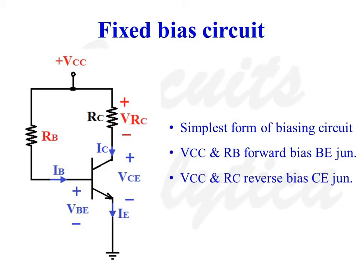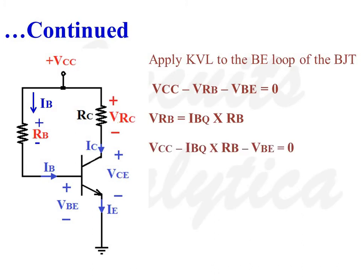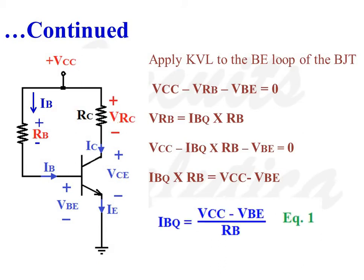First, we write an expression for base current IBQ. Applying KVL to the base-emitter loop of the BJT, we get: VCC minus VRB minus VBE equals 0. Since VRB equals IBQ times RB, we can write VCC minus IBQ·RB minus VBE equals 0, or IBQ·RB equals VCC minus VBE. Therefore, IBQ equals (VCC minus VBE) divided by RB — equation number 1.